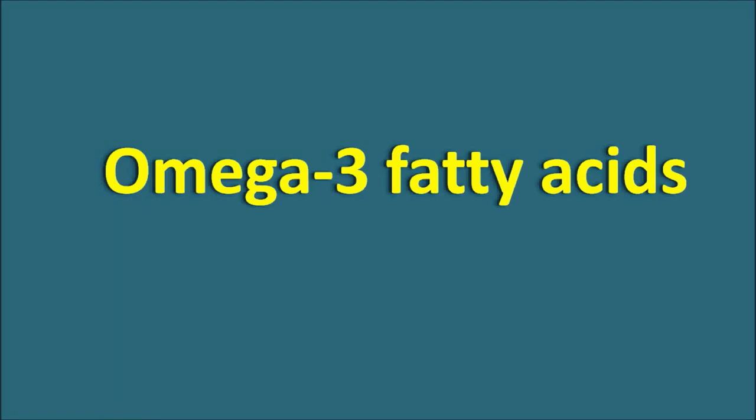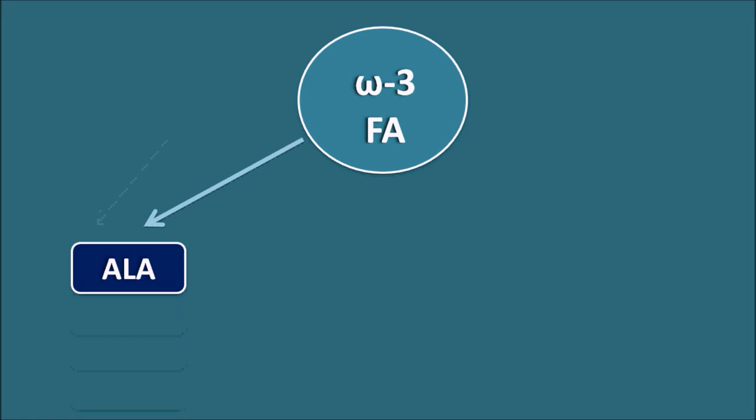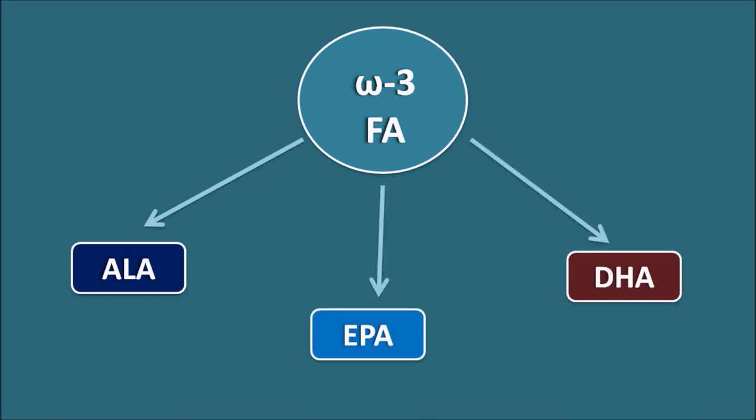Today we will discuss omega-3 fatty acids. Omega-3 fatty acids are three types — they can be denoted as ALA, EPA, and DHA. In this video we will see what is ALA, EPA, and DHA, their structure, notation, configuration of the carbons at the double bond, and how these omega-3 fatty acids are useful in the body.